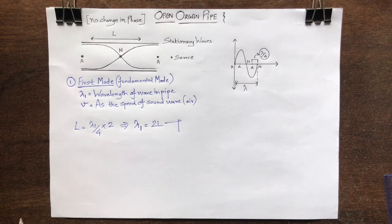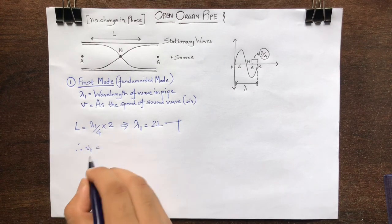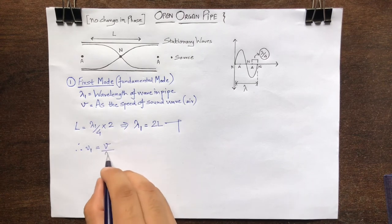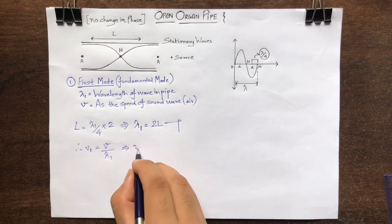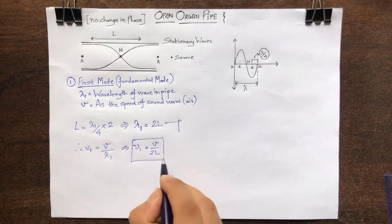Therefore, the fundamental frequency mu1 is equal to v upon lambda 1, that is v upon 2L. Mark it as equation 1.